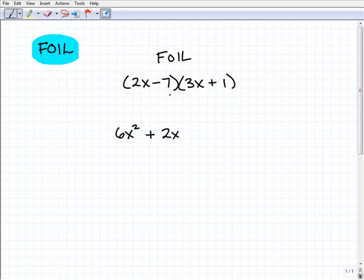Now I'm moving on to my inners, and that's going to be these two terms. And don't forget, that is a negative 7. Don't use 7. That's negative 7. So negative 7 times 3x is going to be negative 21x. And that leaves us with our last thing to do. That's the last. Multiply the last. It's negative 7 times 1, or negative 7.